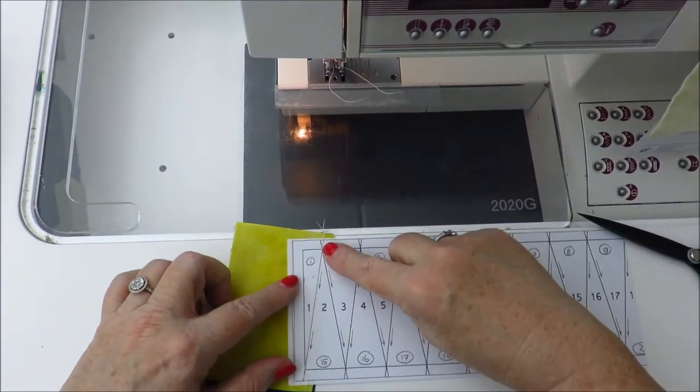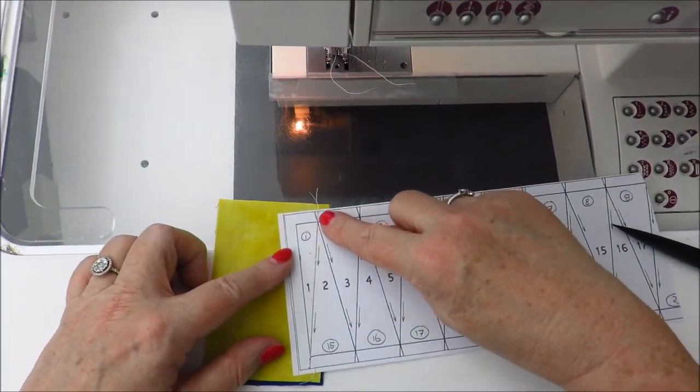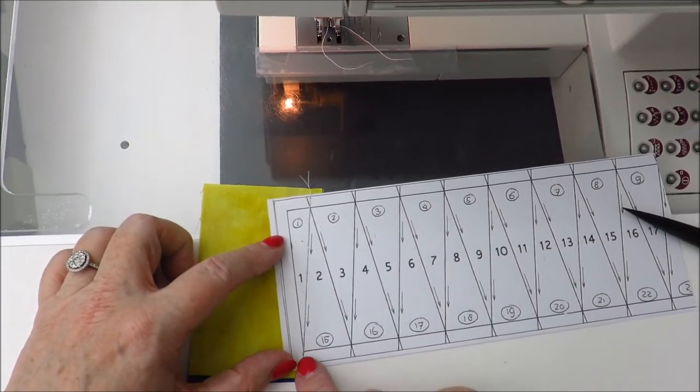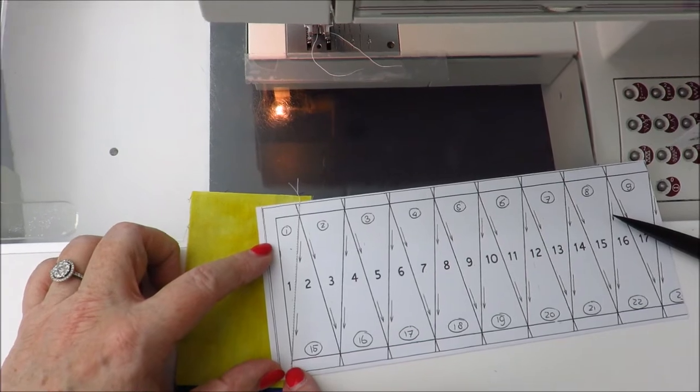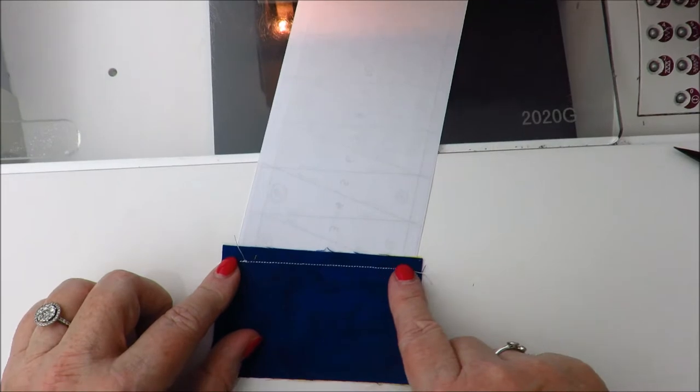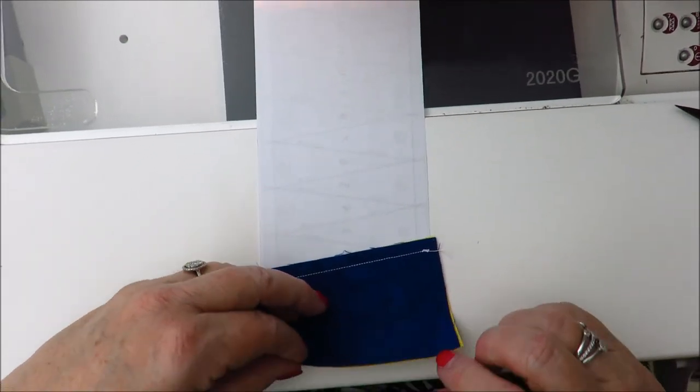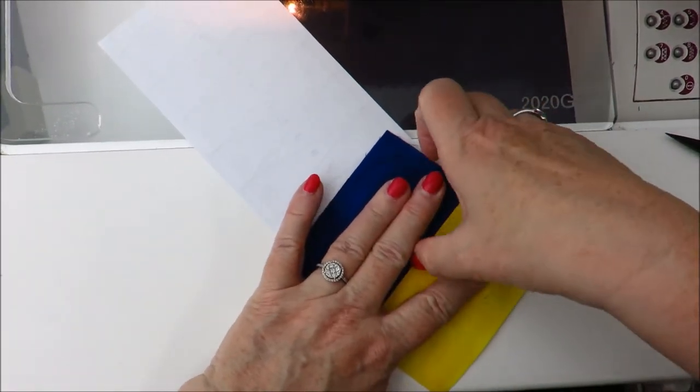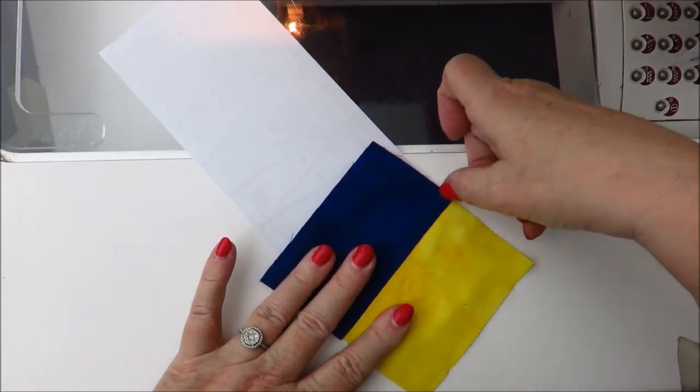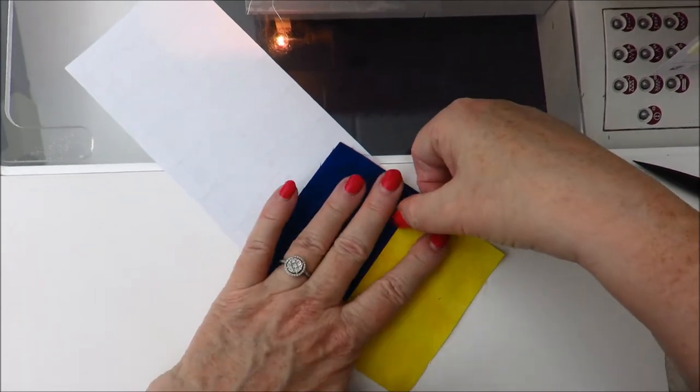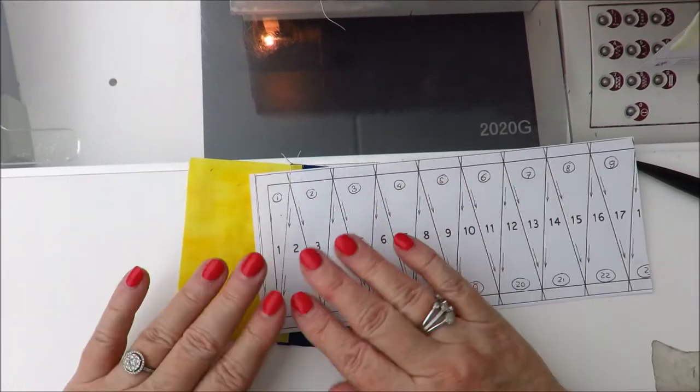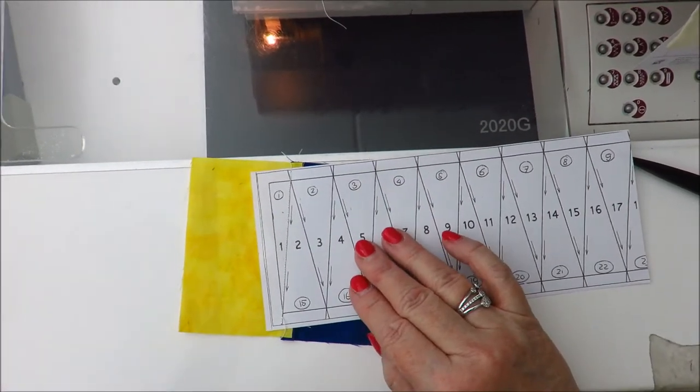I always start with a tiny back stitch, go all the way down over the line, and end up here in the seam allowance with a back stitch. If I turn the piece, you can see we have a beautiful seam about a quarter of an inch. The only thing I do now is finger press. I hold it between my two fingers and use my thumbnail. These are my first two steps.